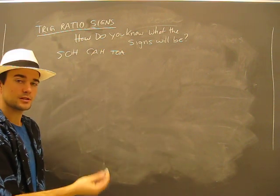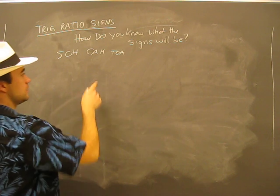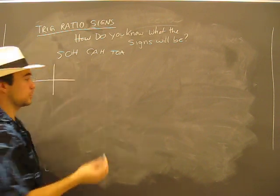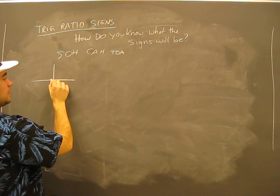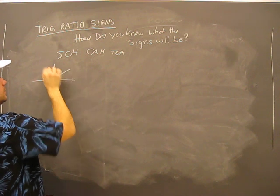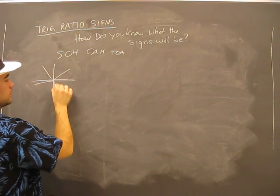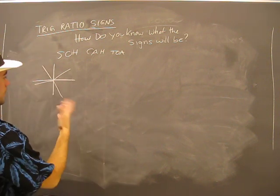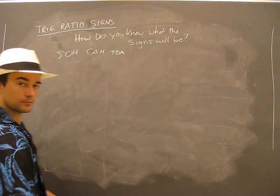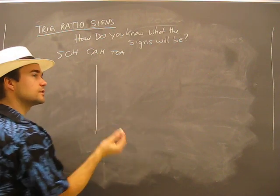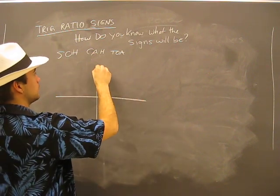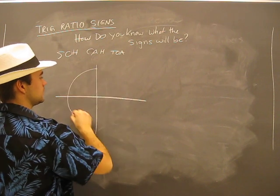We remember the basis of our ratios — what those mean. So let's look at this. We can have angles in any of the four quadrants, or they can be on the line too, but that's a special case. It can be the first quadrant, second quadrant, third quadrant, or fourth quadrant. We're going to look at the properties in each quadrant. We'll just pretend this is a unit circle.